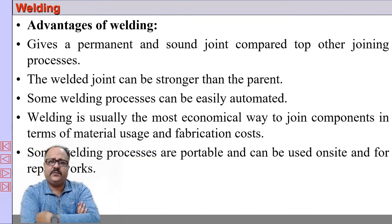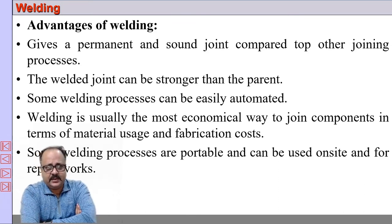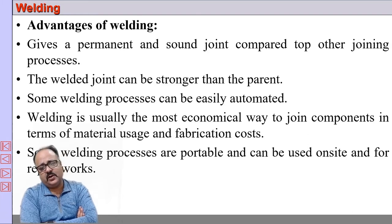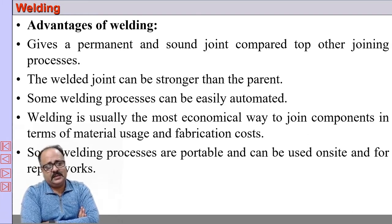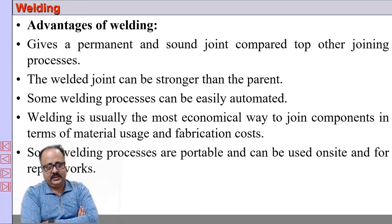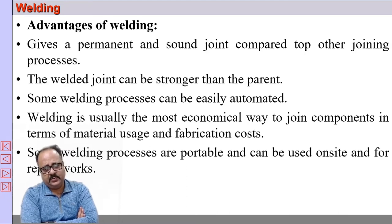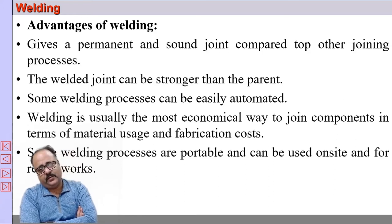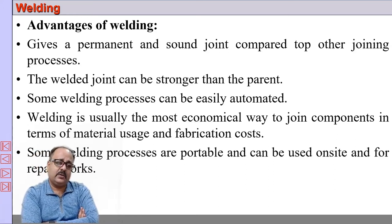The advantages of welding compared to other joining processes: it gives a permanent joint and often a much stronger joint — sometimes the welding joint can be stronger than the parent metal. Some welding processes can be automated. Welding is often an economical way of joining components. The welding process is portable and can be used on site. Welding is also often used for repair works, not only for manufacturing.